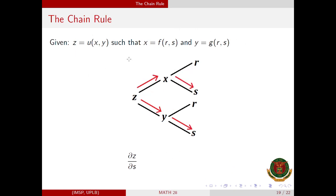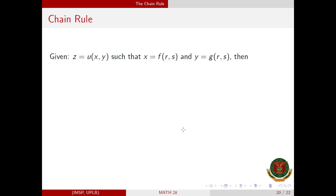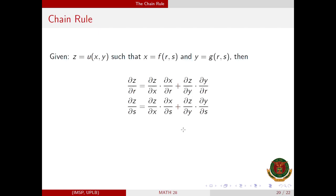Similarly, if we are asked to find the partial derivative of z with respect to s, for the first path we have the partial derivative of z with respect to x times the partial derivative of x with respect to s, plus the partial derivative of z with respect to y times the partial derivative of y with respect to s. Here are the formulas we have discussed. Let's now go to an example.